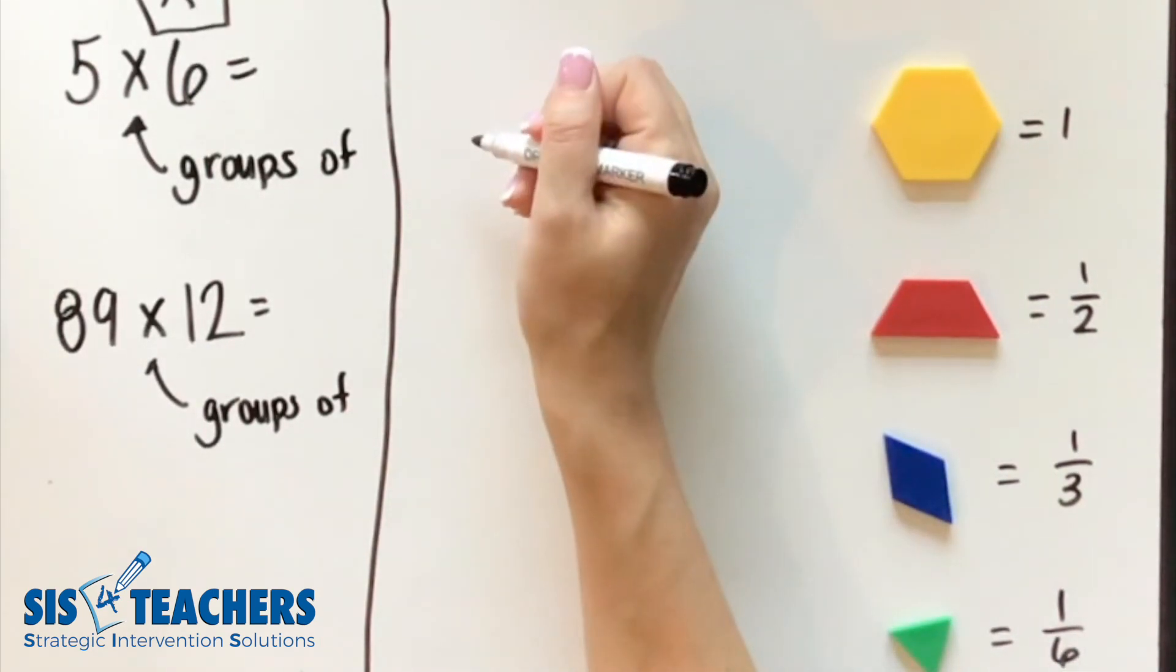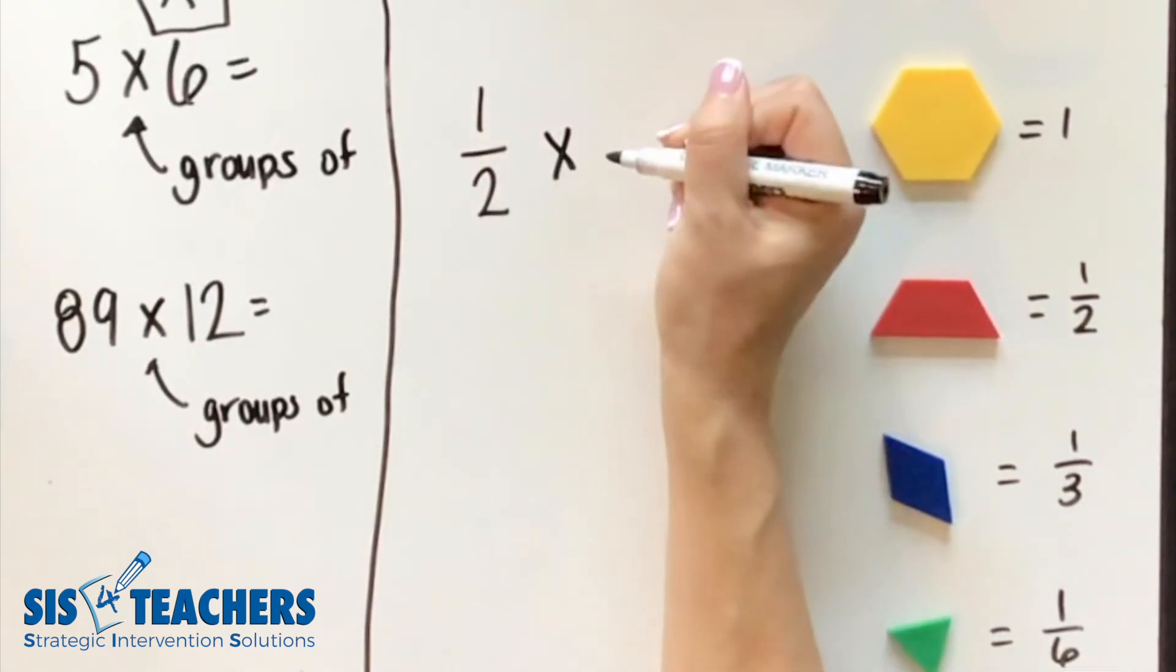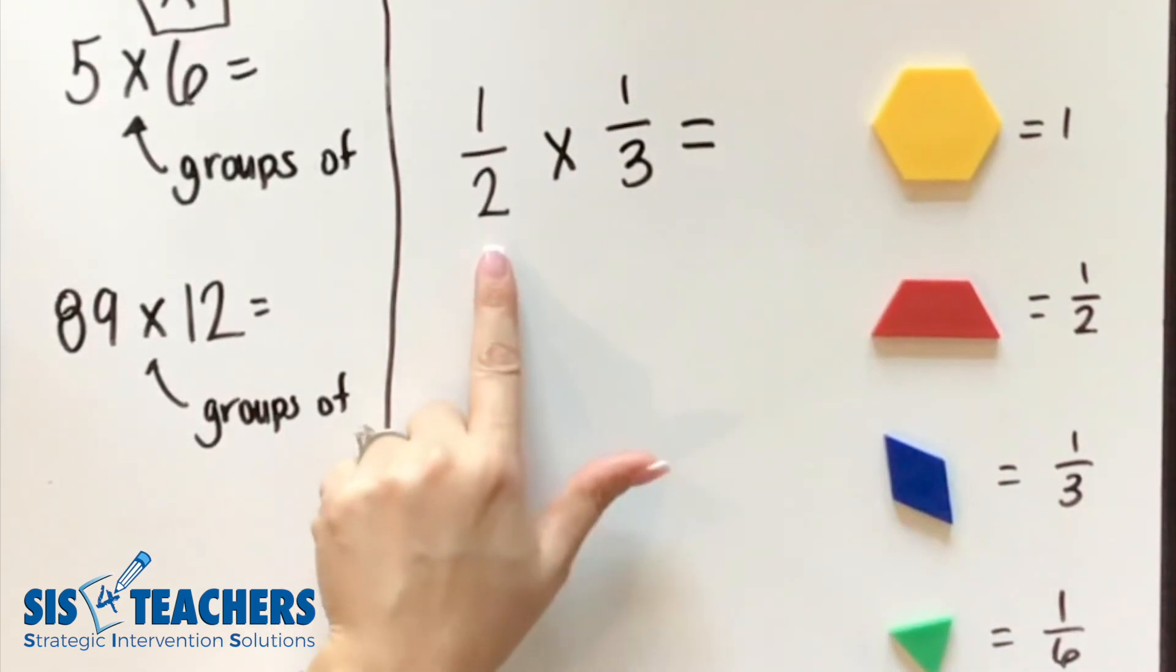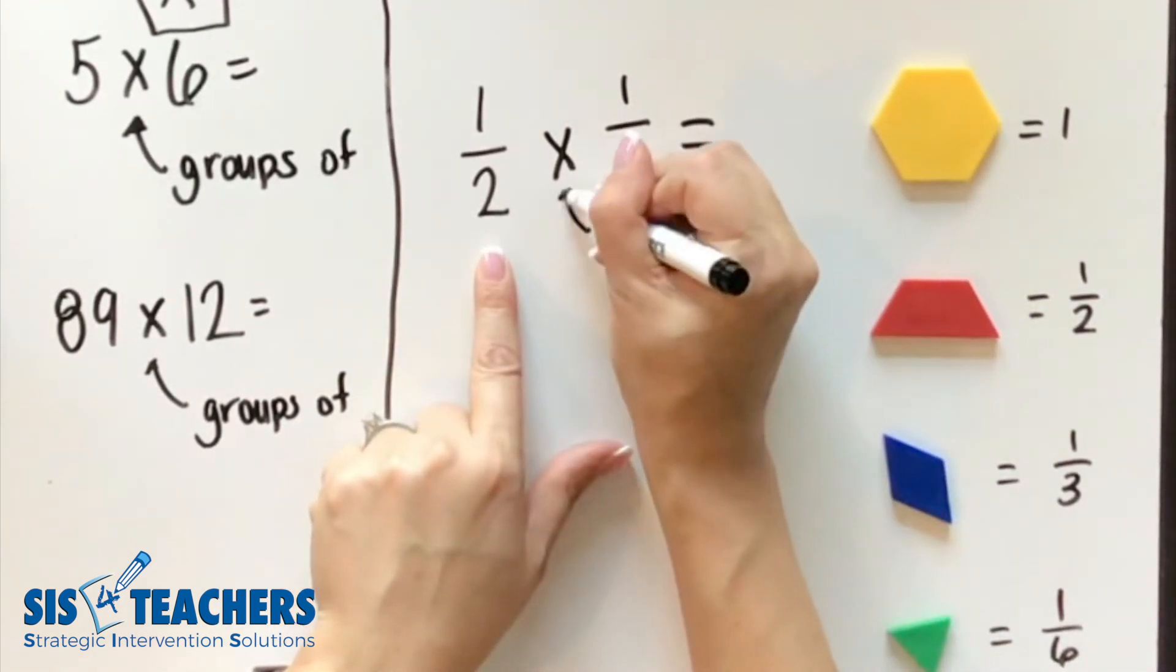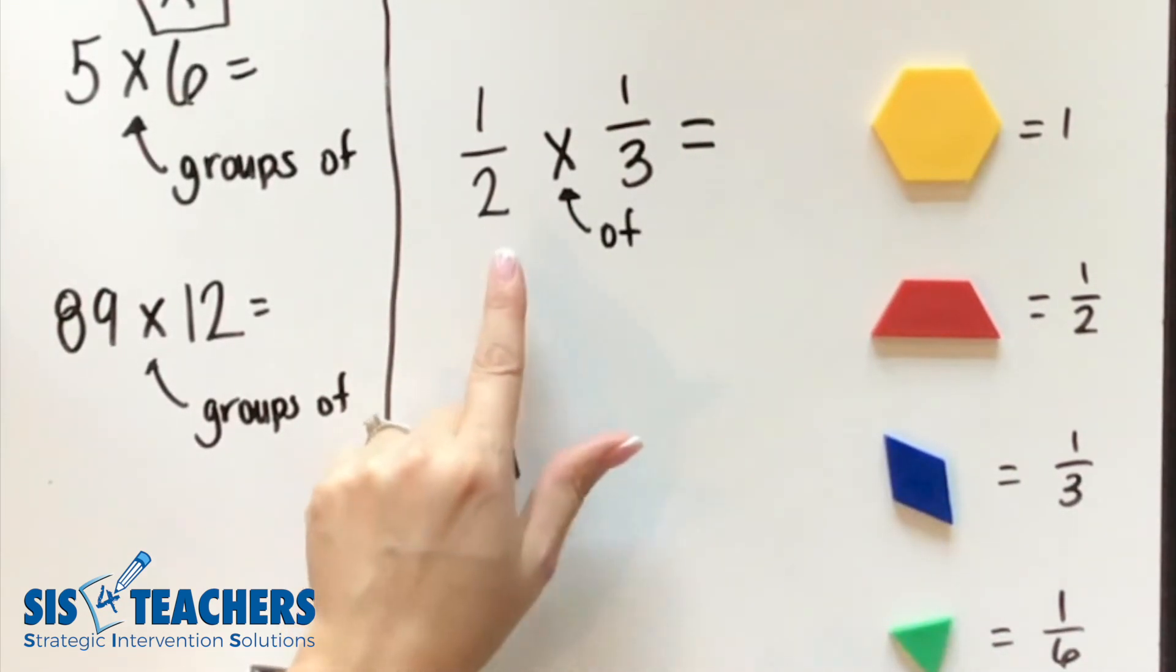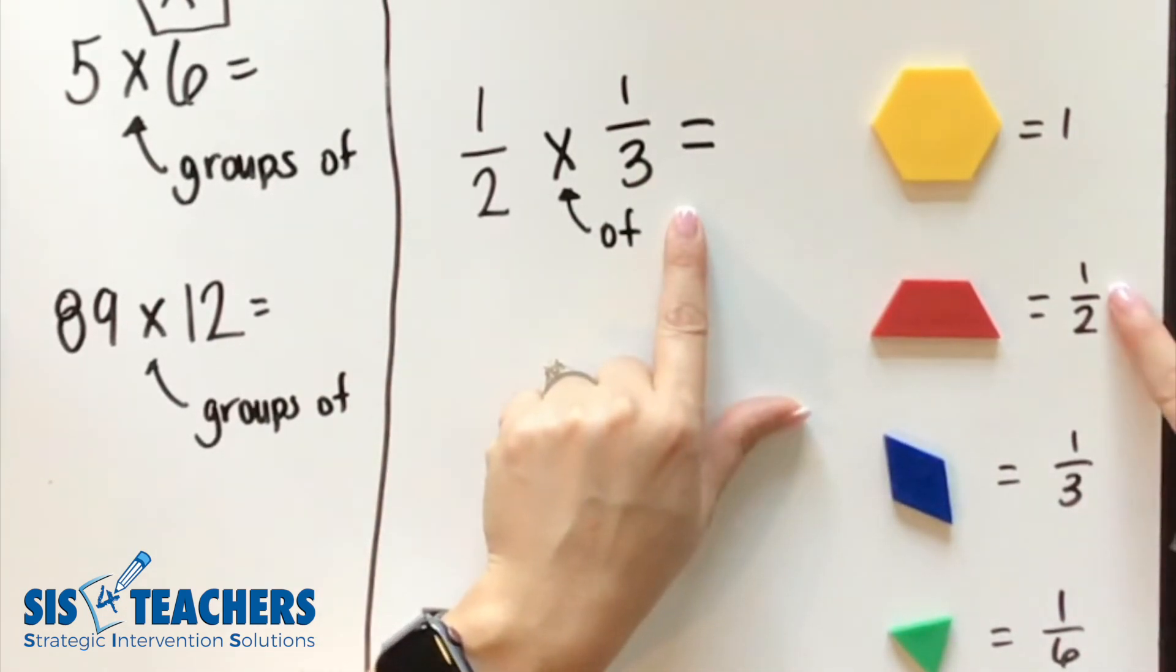Let's try to look at maybe a fraction times a fraction. We first want to really understand what it's asking us. So this means half, and we can use just the word 'of' when we're thinking of fractions to make it easier. So what is half of a third? Should I get out my half, or should I get out my third?